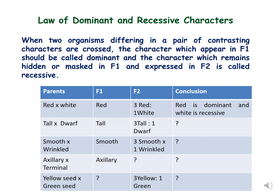The first law, called the law of dominant and recessive characters, states that when two organisms differing in a pair of contrasting characters are crossed, the character which appears in F1 is called dominant, and the character which remains hidden or masked in F1 but expressed later in F2 is called recessive. This means that if parents differing in contrasting characters are crossed, in the first generation (F1) the character which appears is dominant and which remains hidden is recessive.